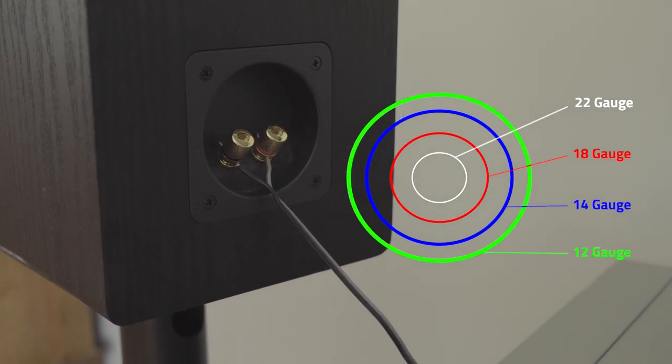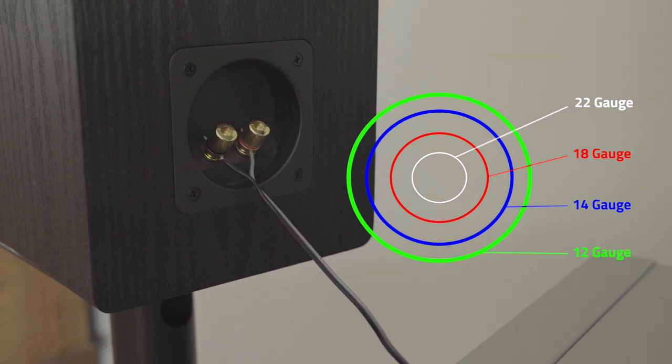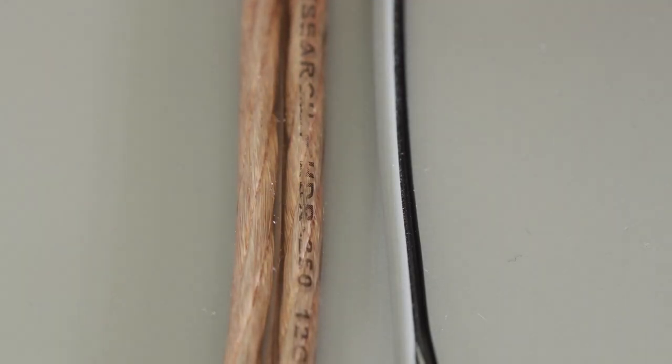The thicker the wire, the less resistance to electrical signals. 12 gauge wire, for example, is bigger than 18 gauge wire.